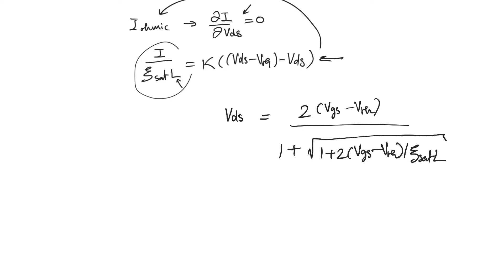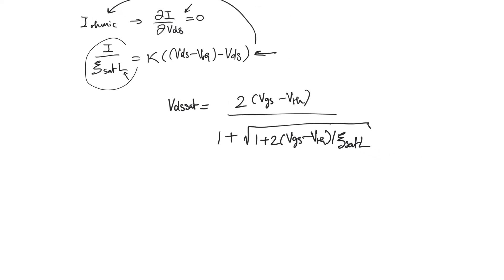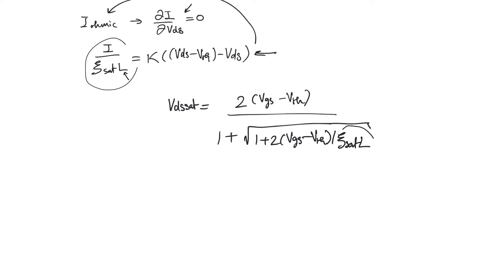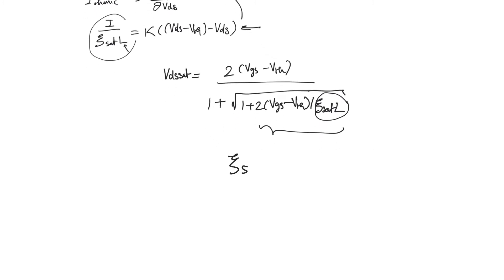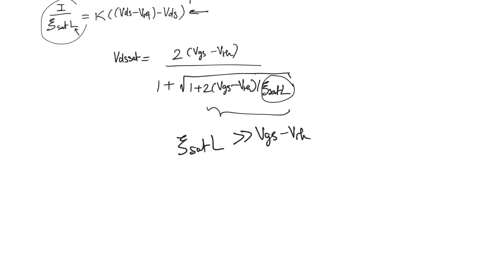This is the value of VDS at which the current stops being dependent on VDS — i.e., where the current saturates. If the channel length is large, so that ESAT·L is much larger than VGS minus VTH, the fraction in the numerator approaches zero and the denominator reduces to 2, giving VDS_SAT equals VGS minus VTH. This is the traditional pinch-off saturation mechanism.